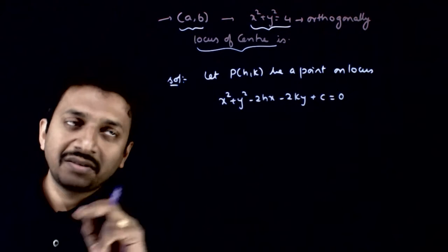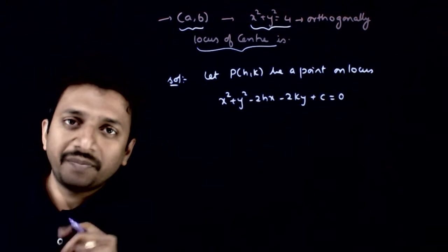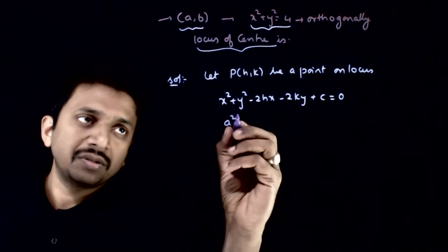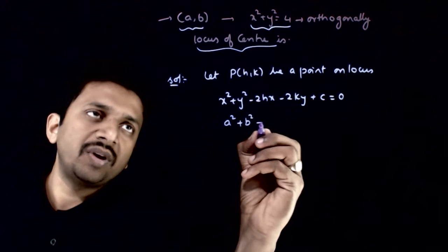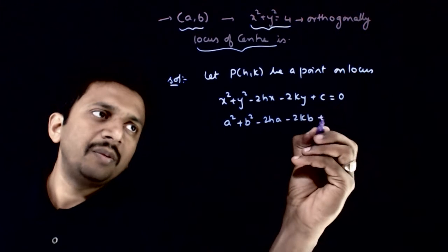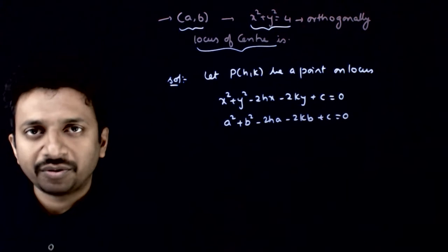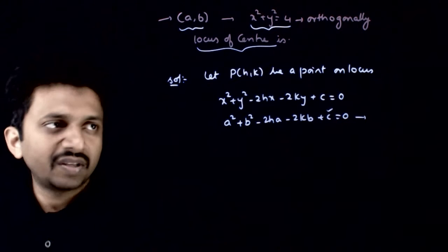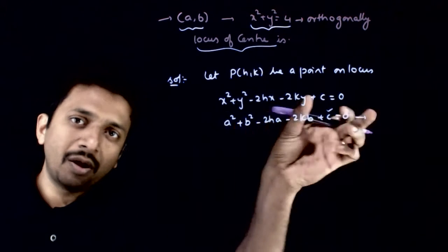Now, let us use the first condition that this circle passes through (a,b). It means (a,b) has to satisfy this equation. So a² + b² - 2ah - 2kb + c = 0. From this condition, you get the value of c.